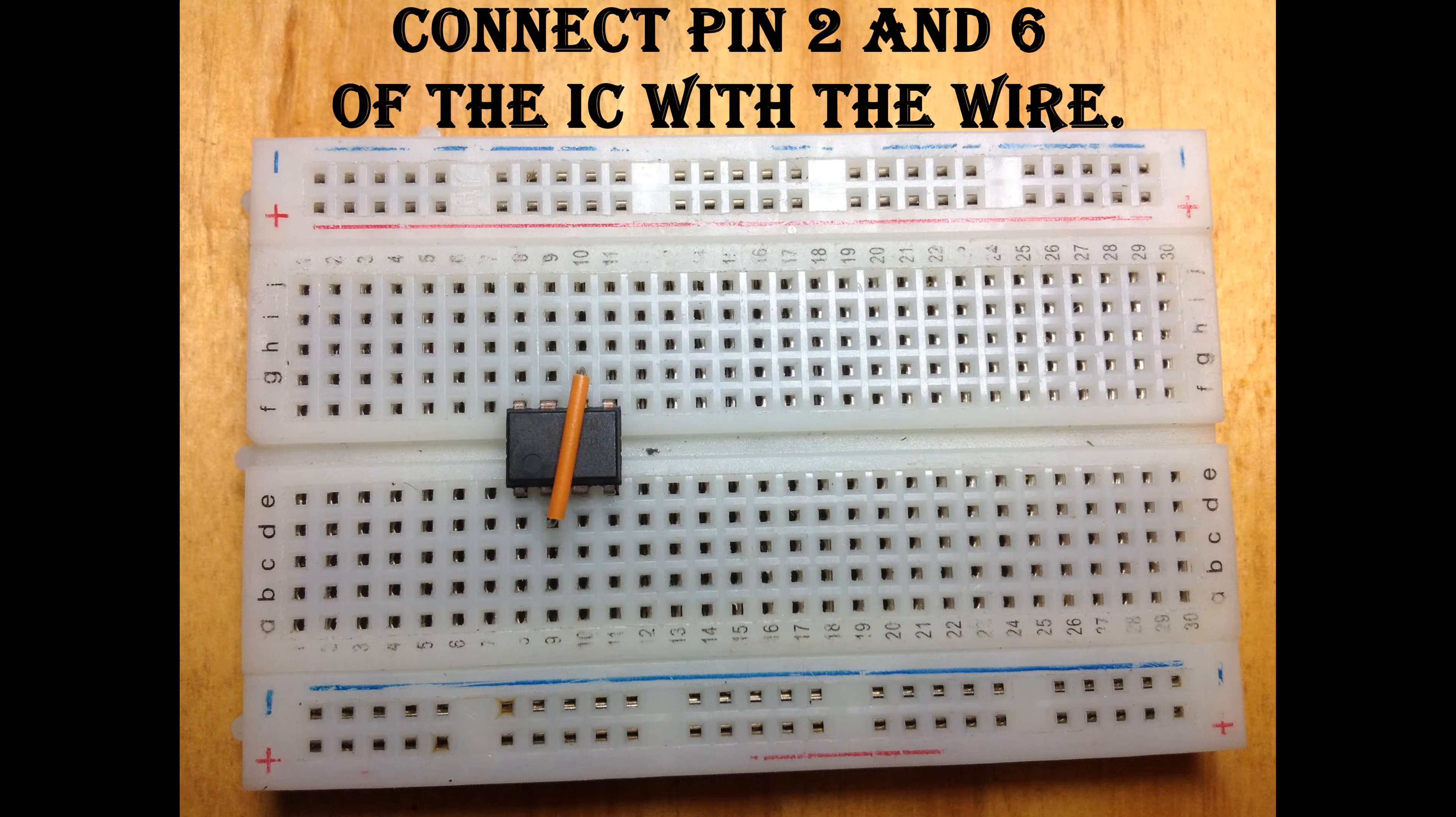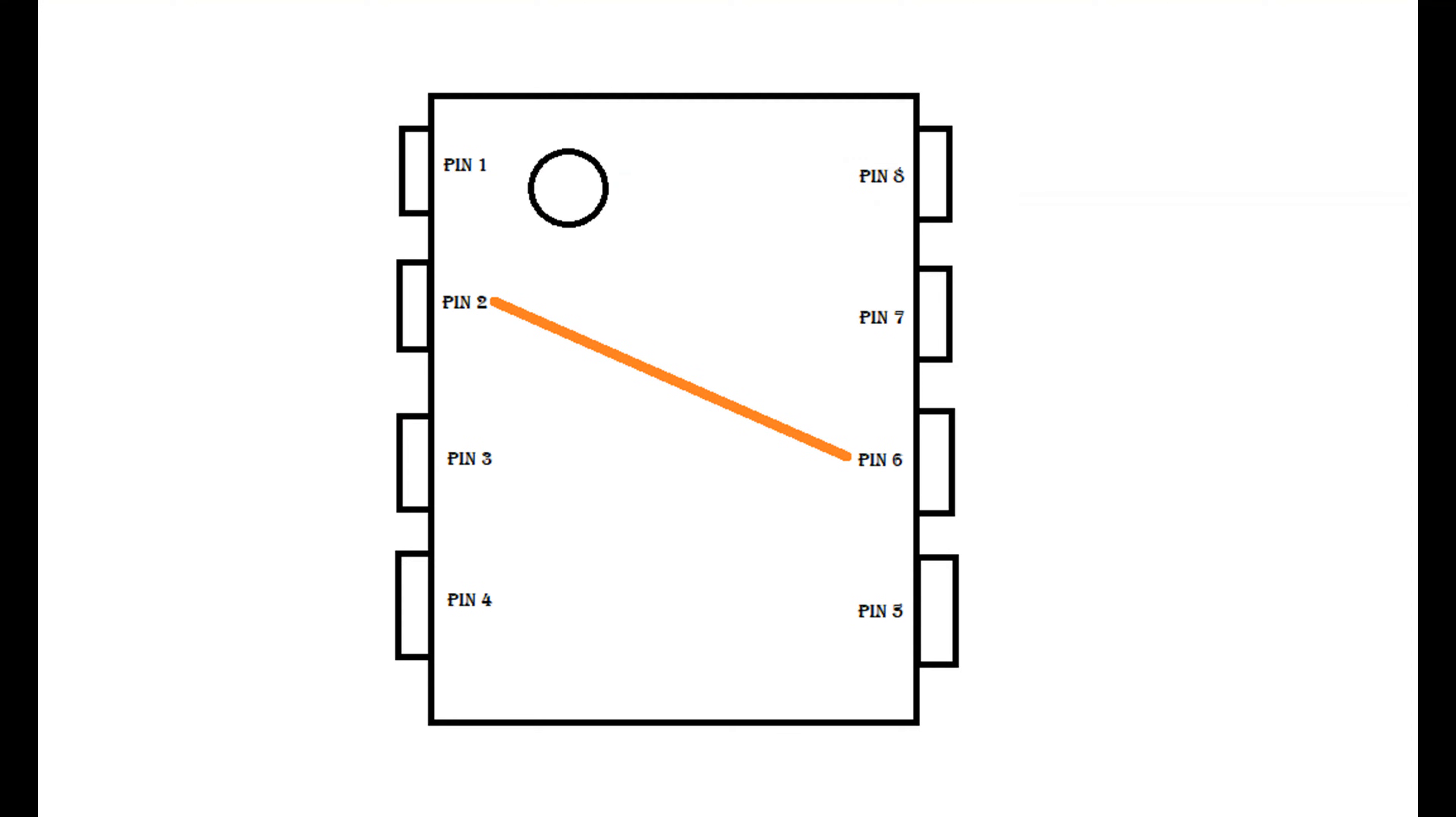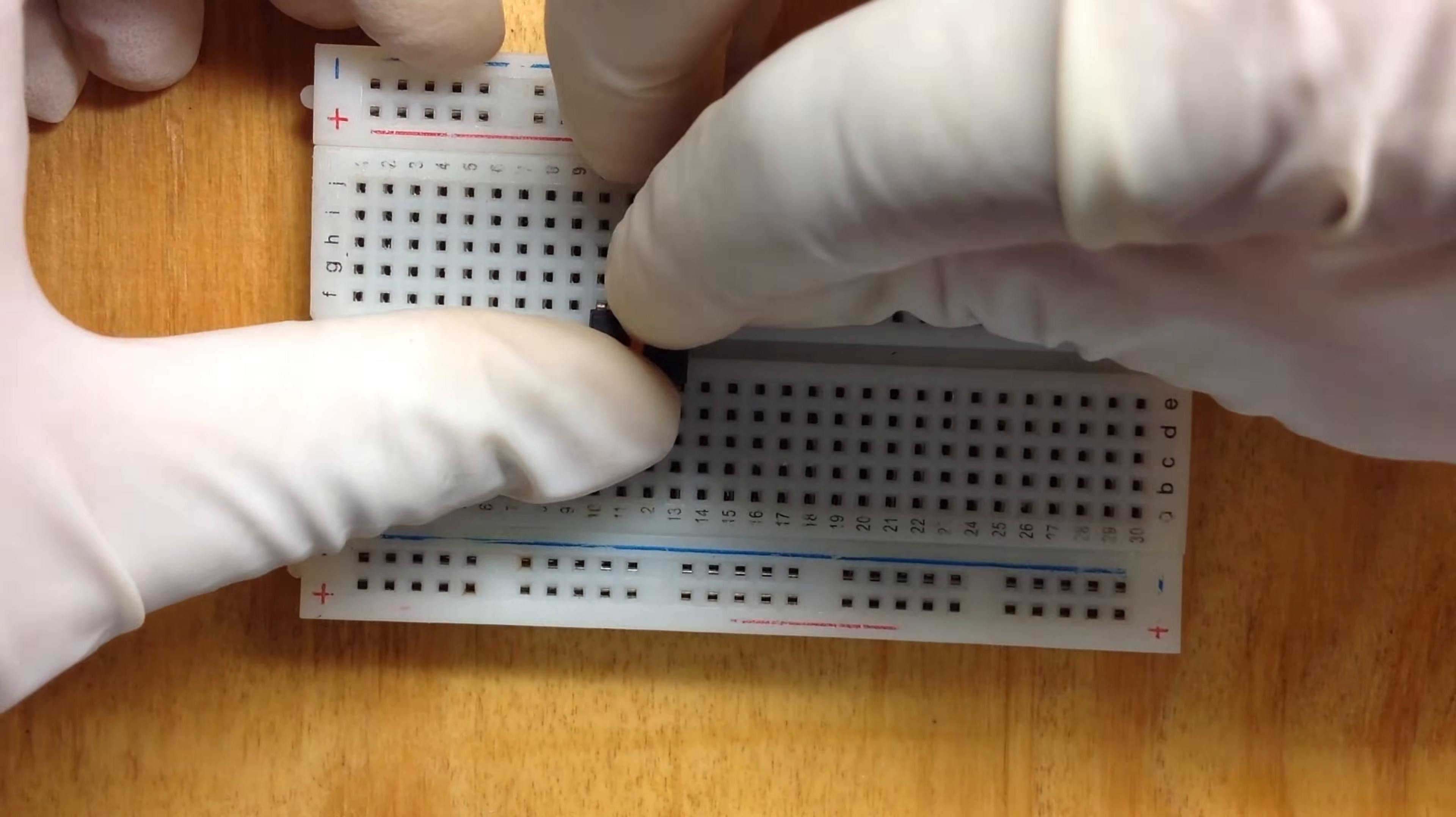Connect your wire from pin 2 to pin 6 of the IC.